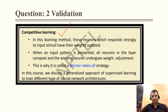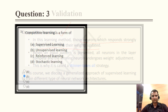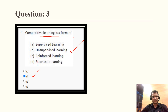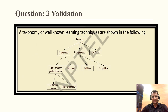Question 3: competitive learning is a form of unsupervised learning, so the correct option is B. This was also asked in a previous year question paper — what is Hebbian learning a form of? It is also a part of unsupervised learning. So competitive learning is a part of unsupervised learning.